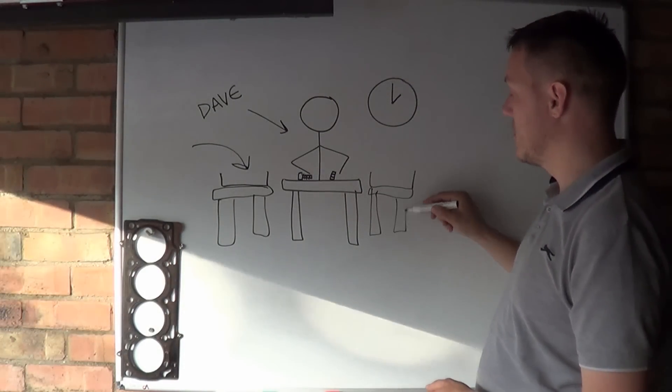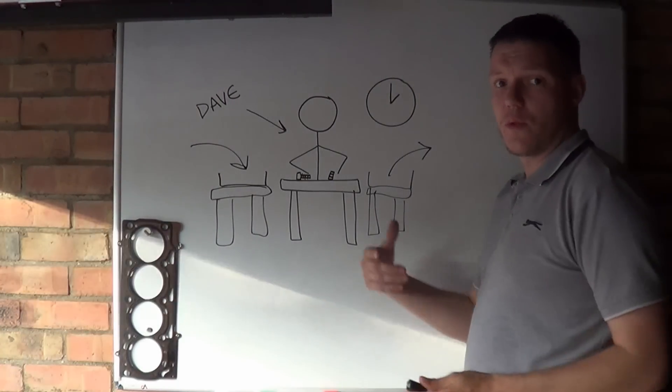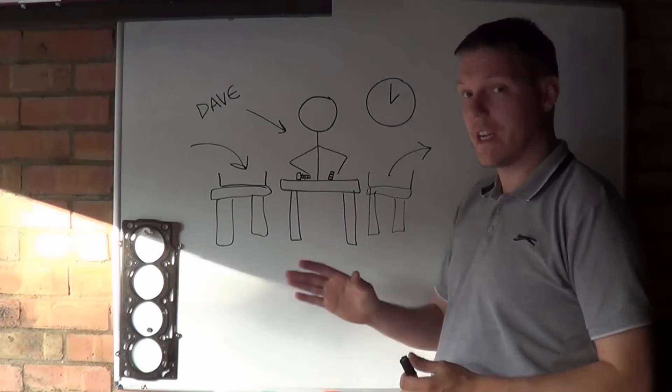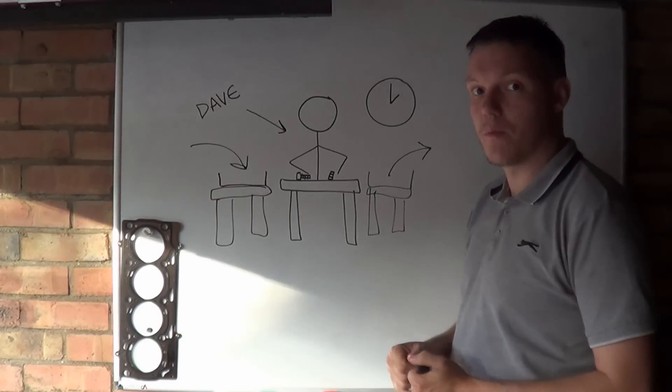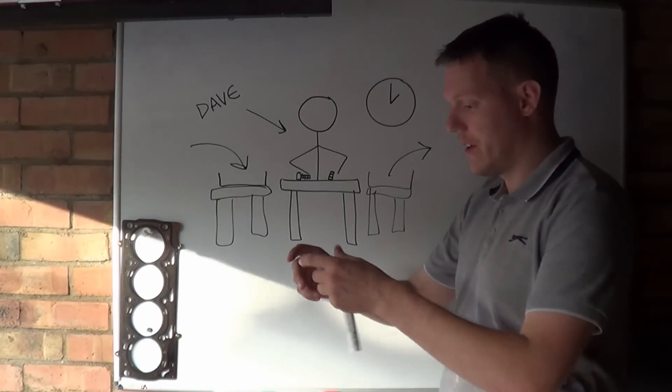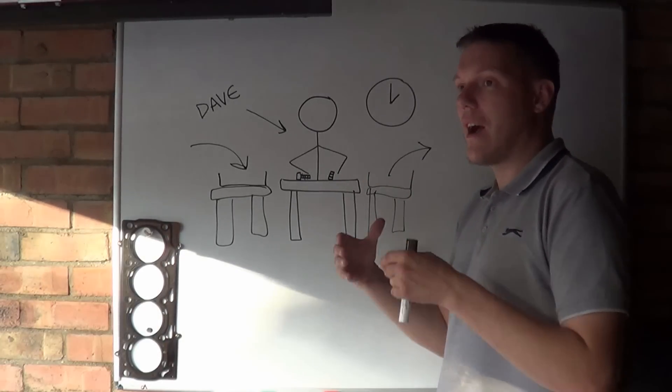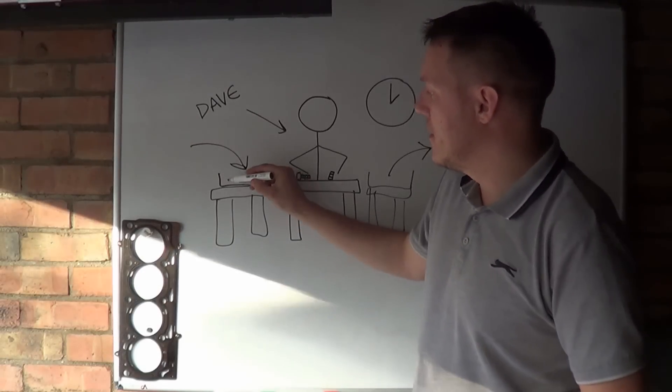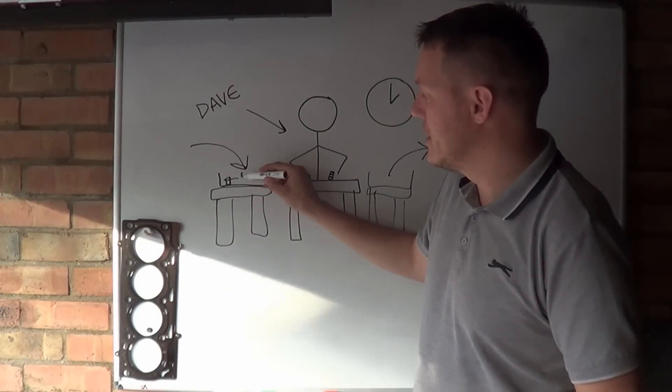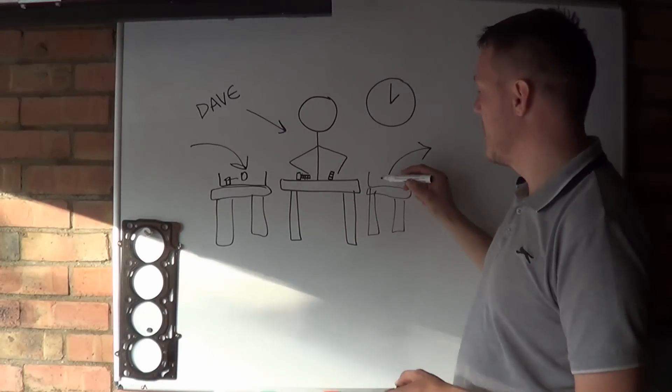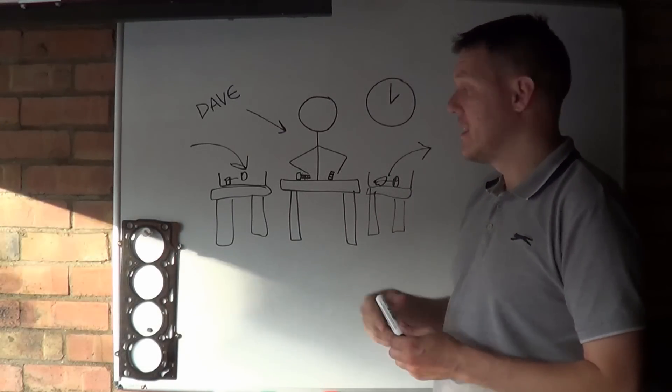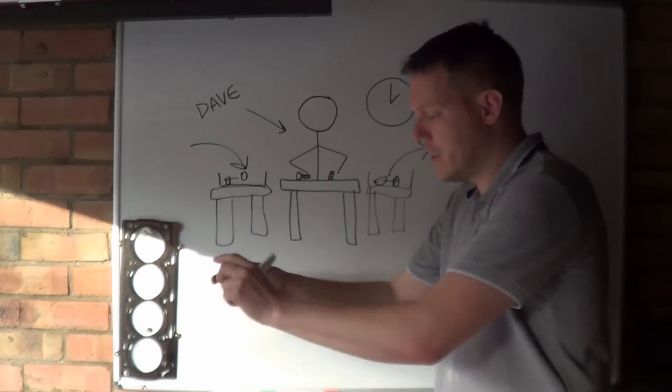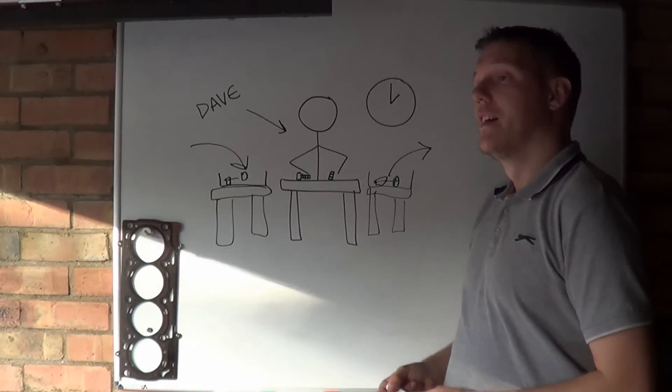The way this works is every 10 seconds, a bolt and nut are dropped into the in-tray. Dave winds them together and puts them in the out-tray. Dave can do this in about two seconds, so he completes the task, then sits and waits for eight seconds until the next bolt arrives.